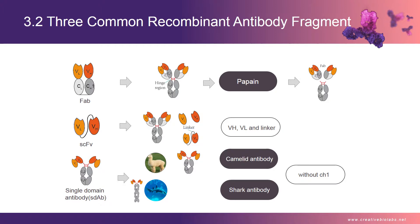The resulting polypeptides, with the variable light (VL) and heavy chain (VH) domains connected by a flexible peptide linker, are assembled into functional antigen-binding sites. The linker technology is a key step in the successful construction of an scFv antibody library. scFvs have been developed as possible drug candidates in their own right, as well as components or domains of drug candidates.